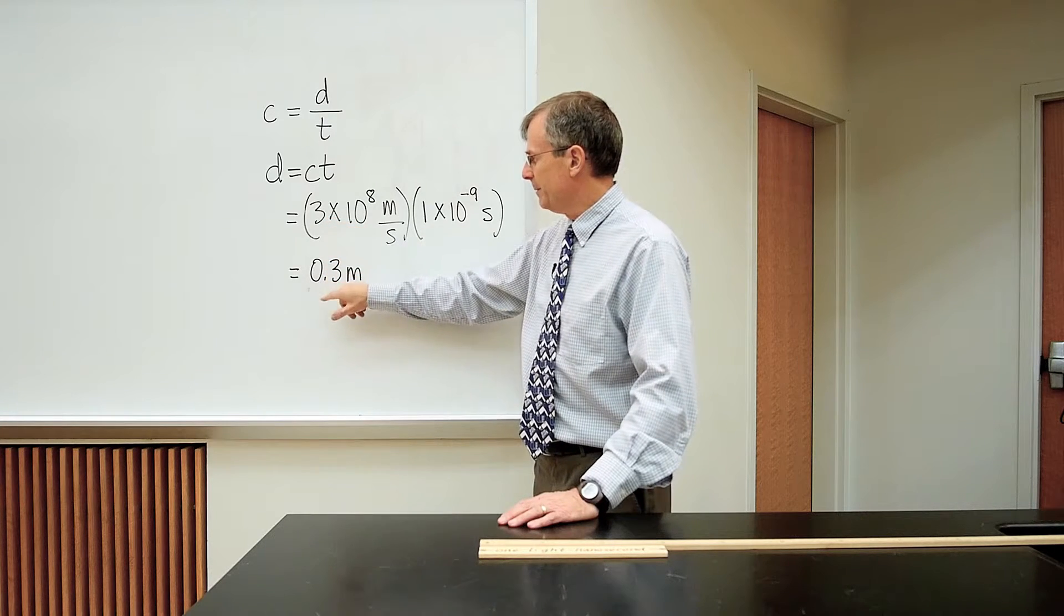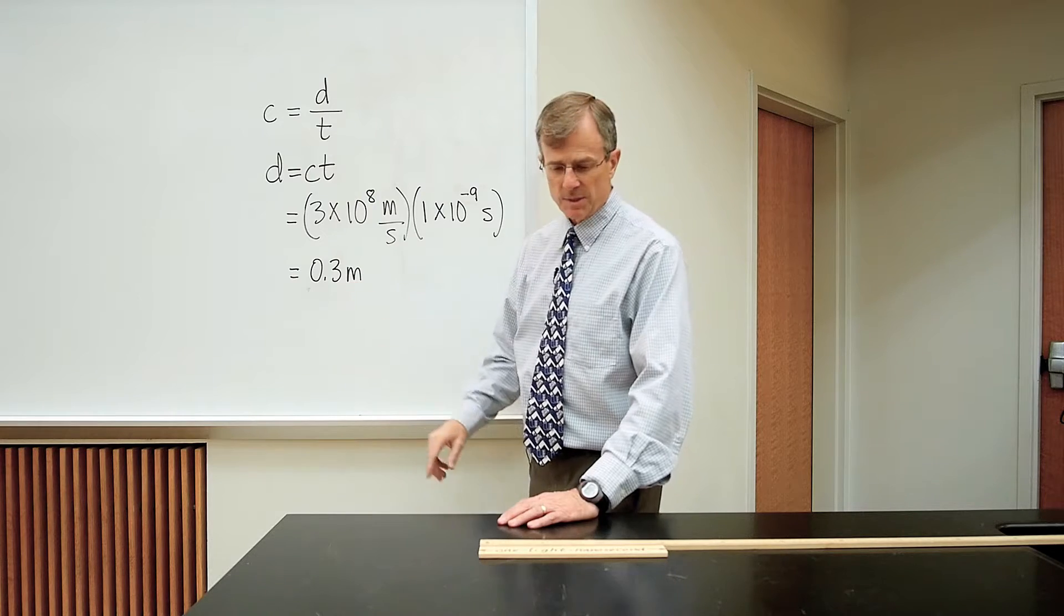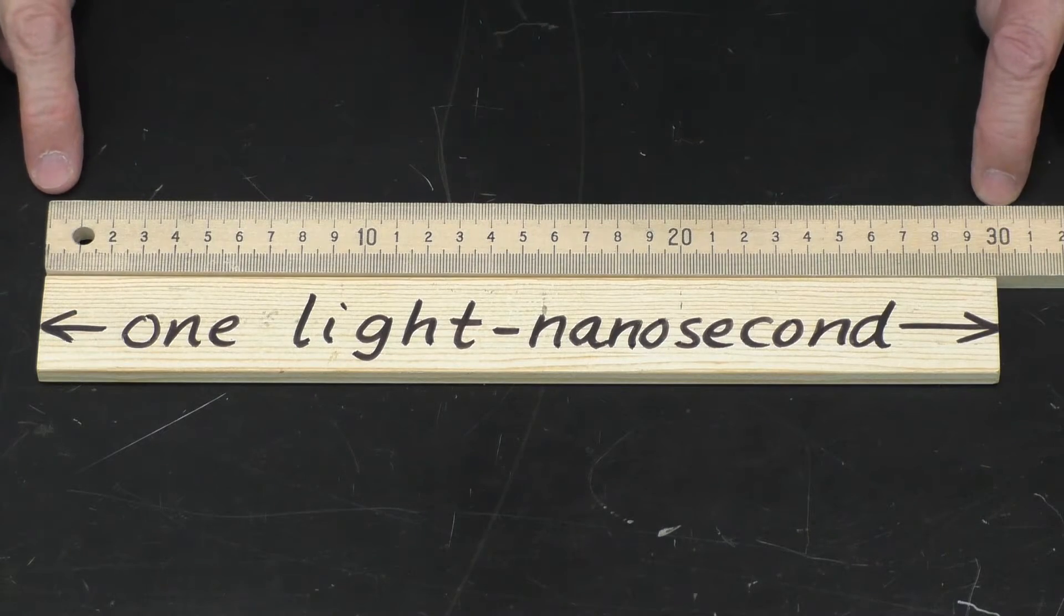So you get 3 divided by 10, which is 0.3 meters, which is the same as 30 centimeters.